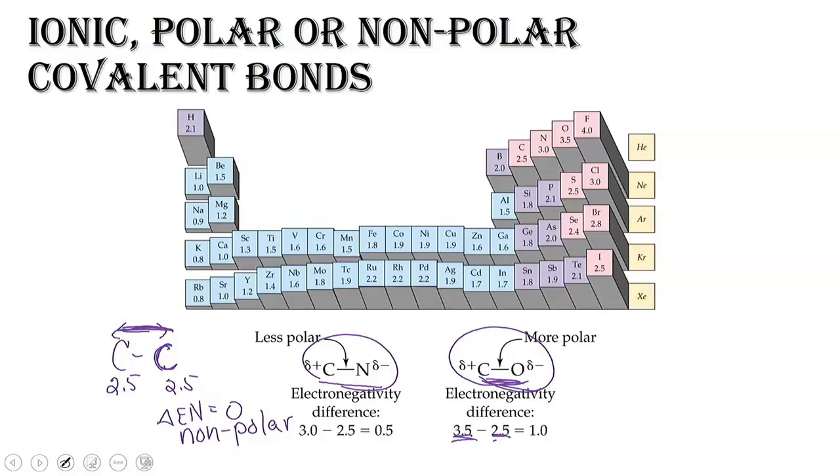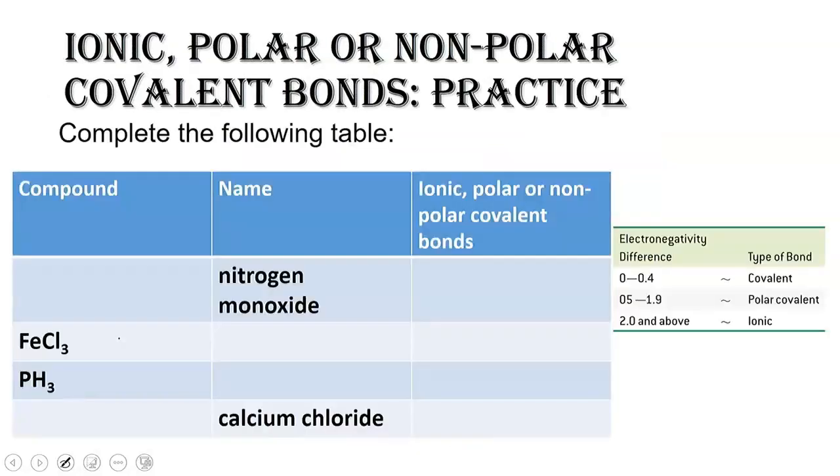Let's do some practice. Before we fill out this table, let's take a look at how we actually consider polar covalent, pure covalent, polar covalent, and ionic. When we look at this table, if you look at more than one textbook, you'll get more than one of these tables.